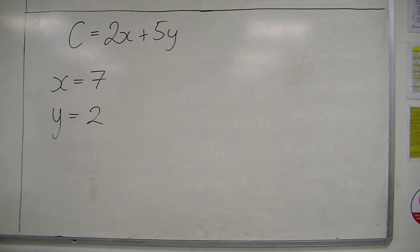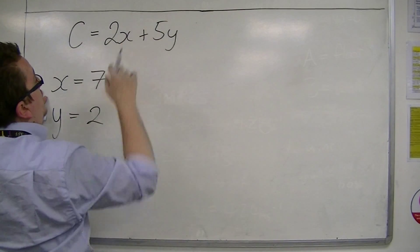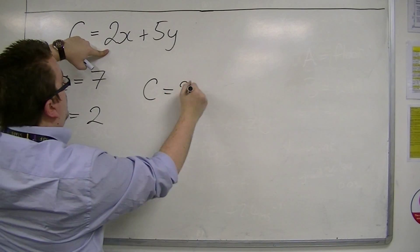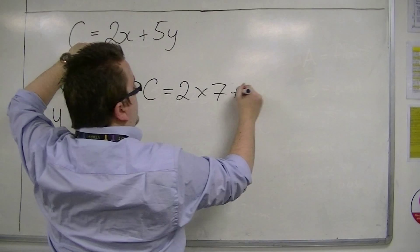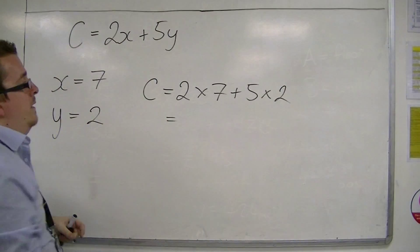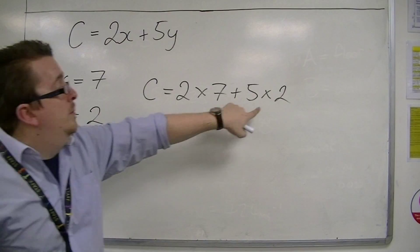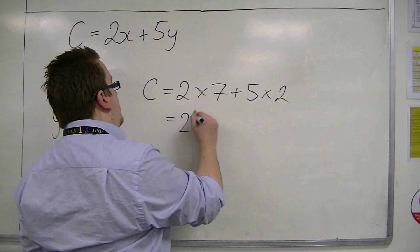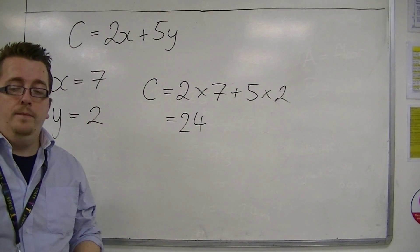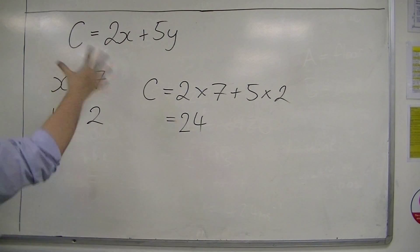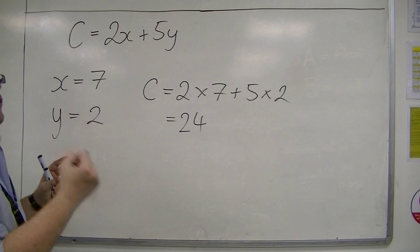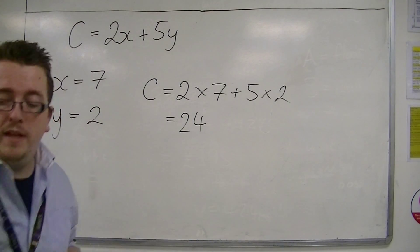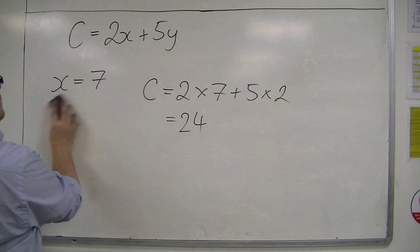I need to know what c is going to be equal to. So I substitute these values into the formula. c is 2 lots of x plus 5 lots of y. So that's 14 plus 10, which is 24. The formula is there as a standalone thing, and then you can change the values that you're putting in. That's what a formula is used to do.